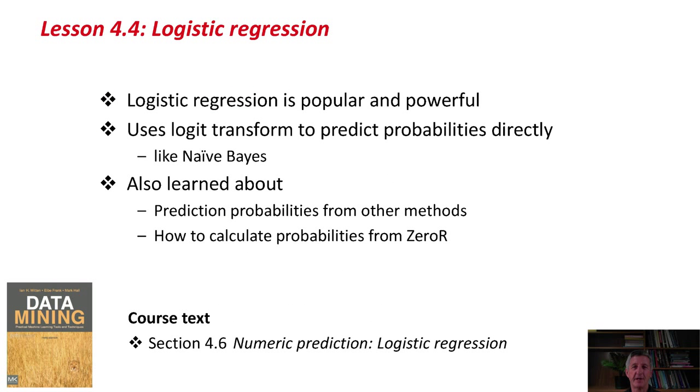The result is logistic regression, a popular and powerful machine learning method that uses the logit transform to predict probabilities directly. It works internally with probabilities, like Naive Bayes does. We also learned in this lesson about prediction probabilities that can be obtained from other methods and how to calculate probabilities from ZeroR. You can read in the course text about logistic regression in section 4.6, and now you should go and do the activity associated with this lesson. See you soon. Bye for now.